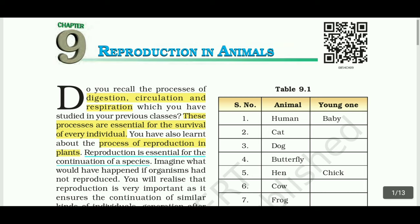First, what is reproduction? Reproduction is the process by which new individuals are formed. From the parent, a new baby form is created.